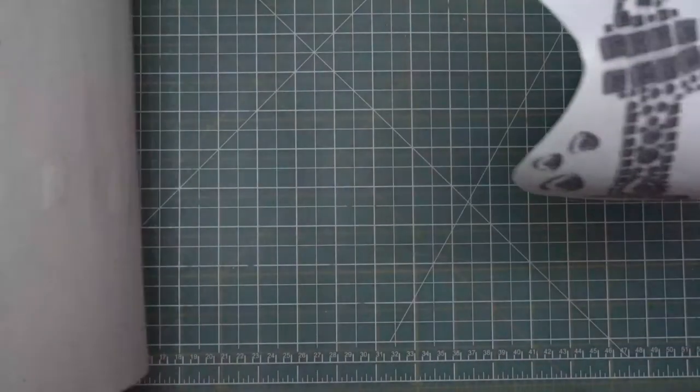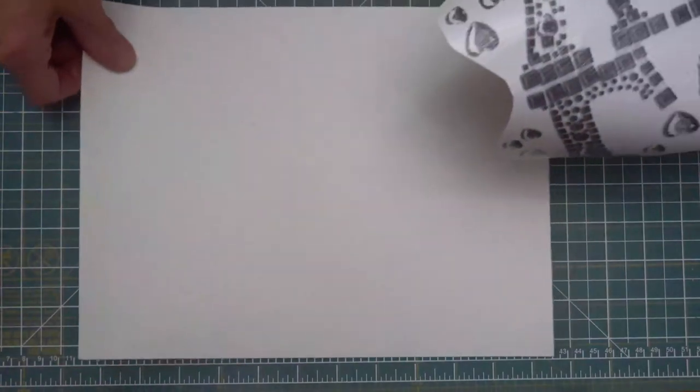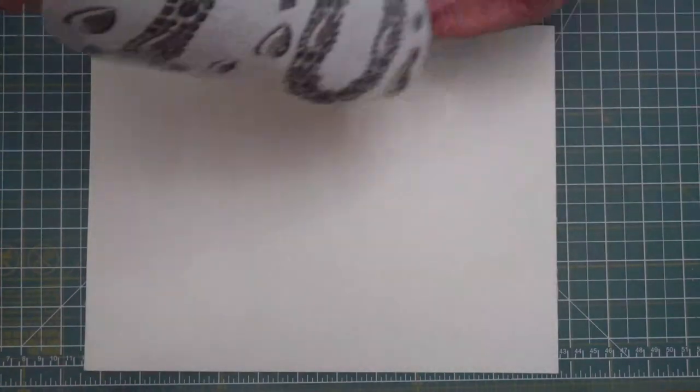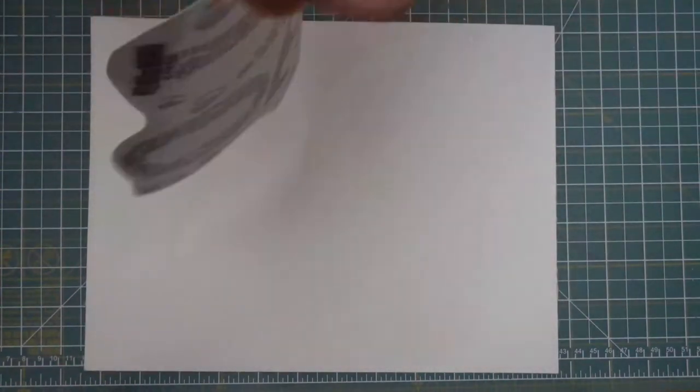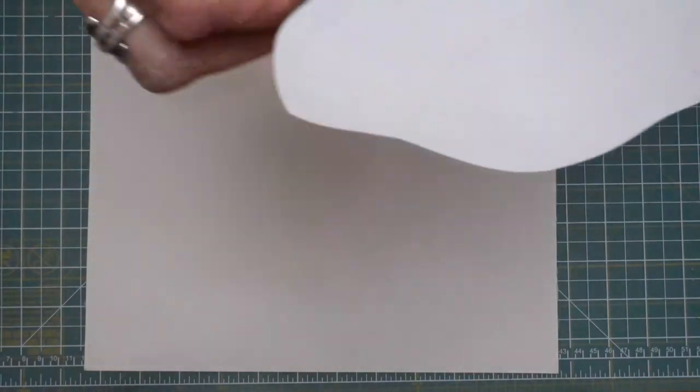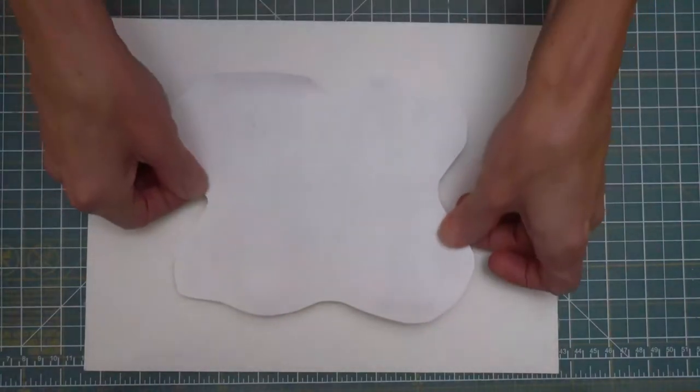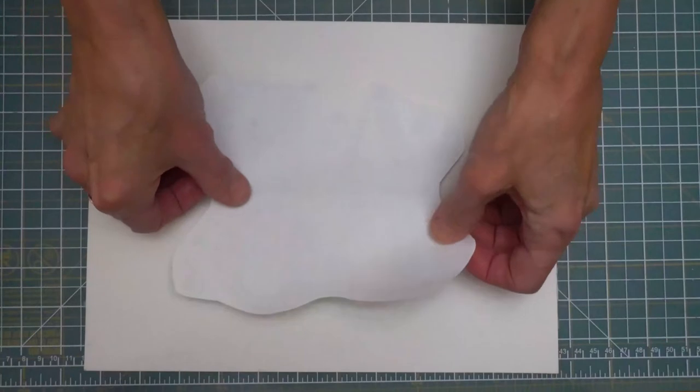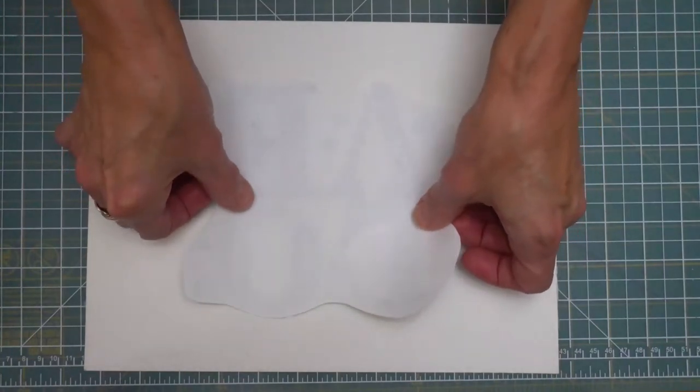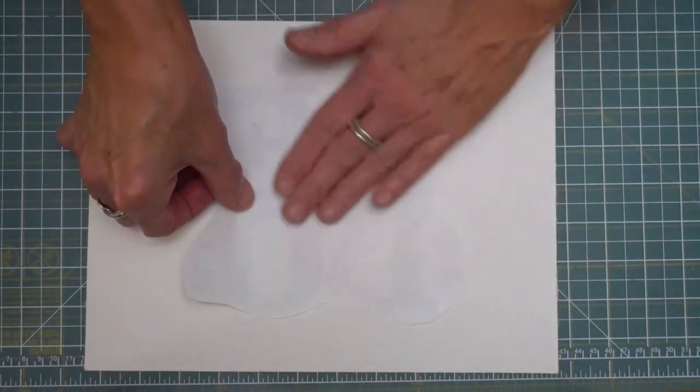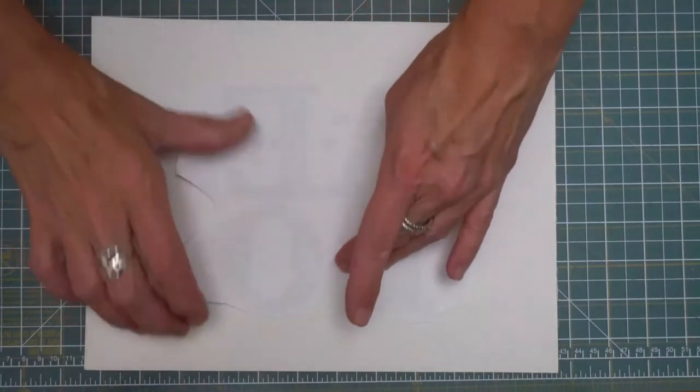Okay, so move this out of the way. And now I'm ready to place this down. I'm going to try to get the center to go down first and then I'm going to smooth away from the center to prevent air bubbles.